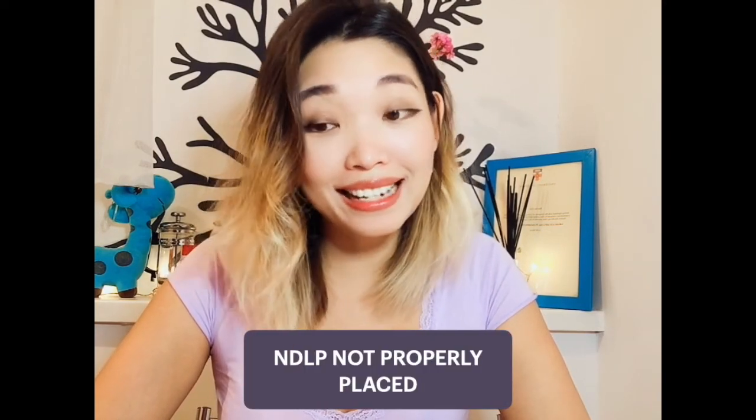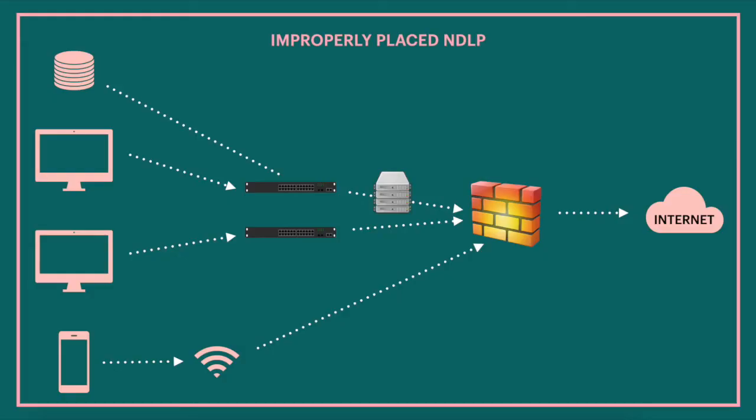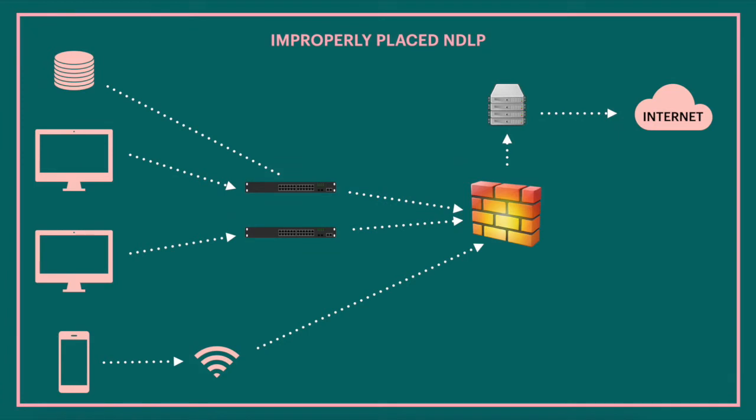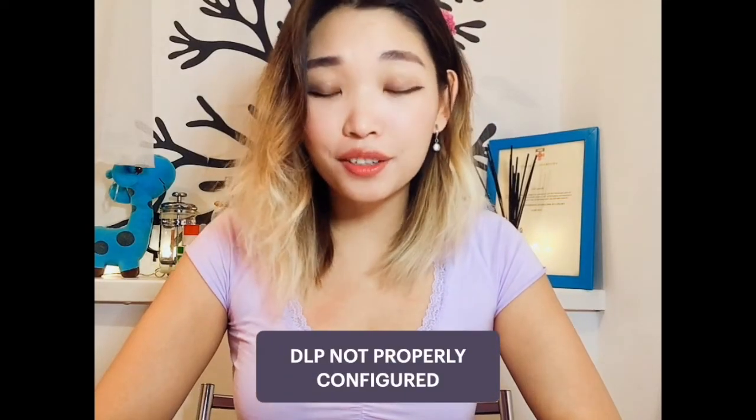Now that we are familiar with data states and DLP types, let's talk risks. The first risk we're going to discuss is the improperly placed endpoint DLP. If the DLP network module is not properly placed within the IT infrastructure, there may be a risk that certain sensitive data will not be inspected. It is important to understand the data flow paths and install the DLP modules at the latest point when data leaves the organizational network.